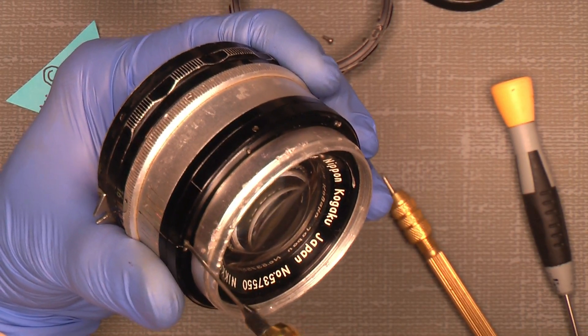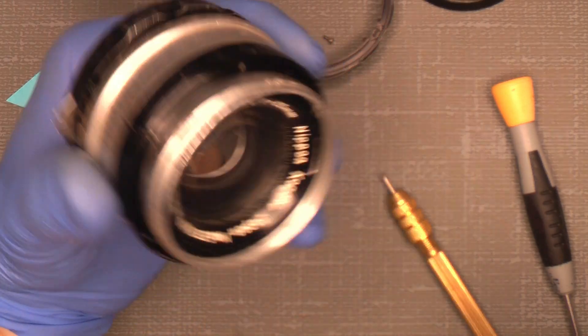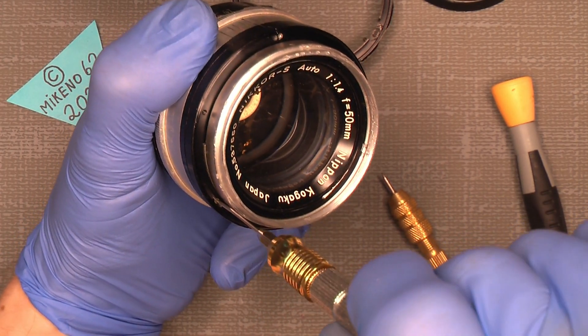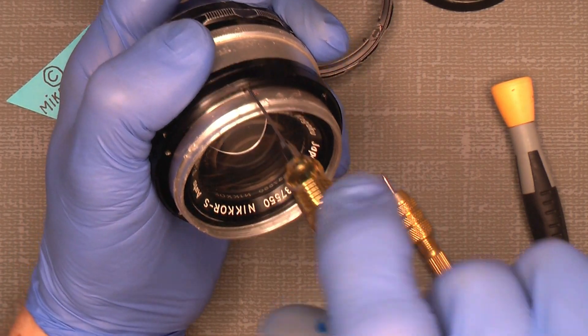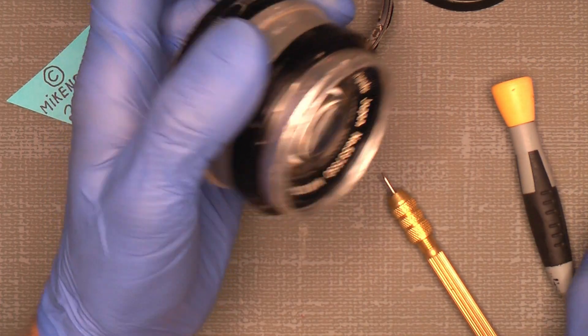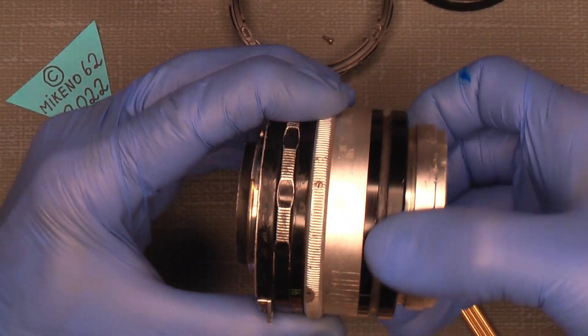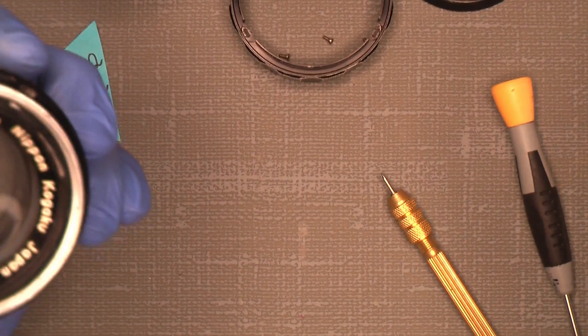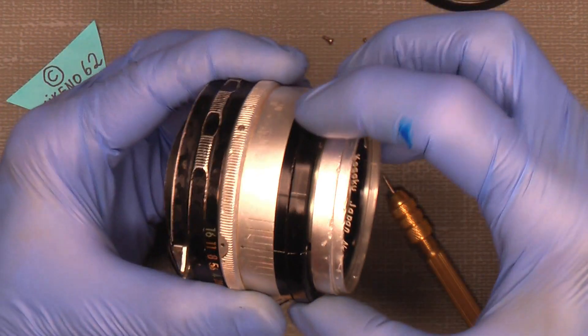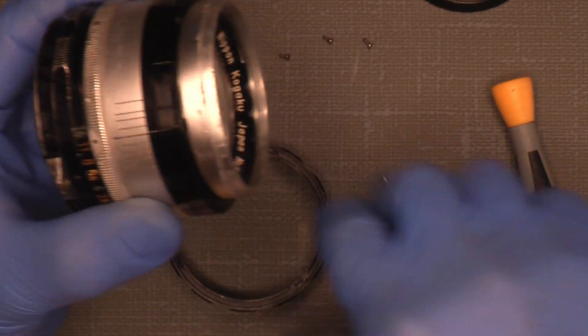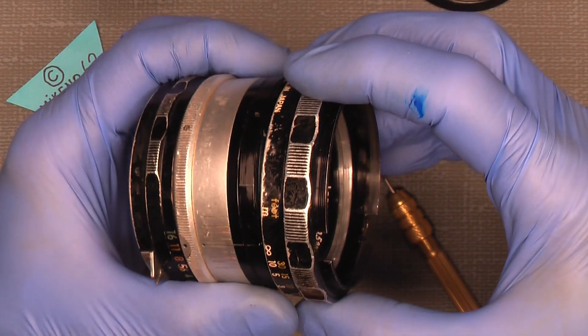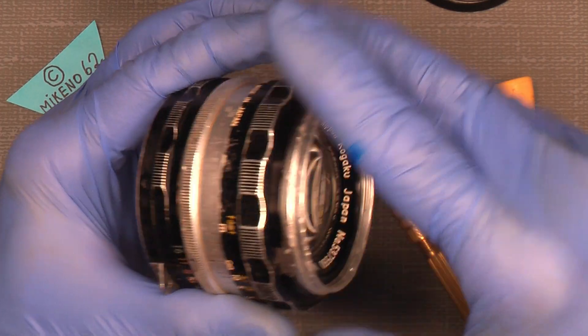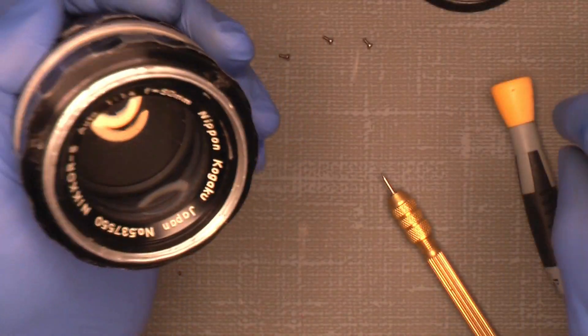When you tighten the screws, gently tighten them, not too much. Or you can add some nail polish on them and in that way it locks the screws. Now we are back to normal as it was before. I can add my focusing ring. Since I have my mark here at infinity, I just put this on here so it is on infinity. And that's it.